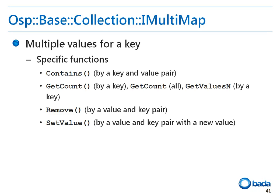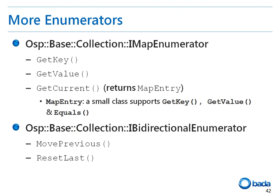While there is one value for a key in iMap, the iMultiMap class can be used when there can be more than one value for a key. Functions are provided to check if a specified key-value pair exists, to identify how many values there are for a specified key, and to change a specified value for a key. For a map and multi-map, a different enumerator is required, called iMapEnumerator. The iMapEnumerator class provides functions to get the key or value of the current point.